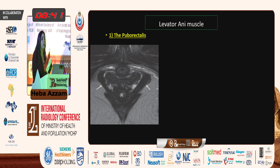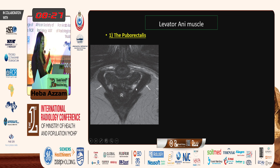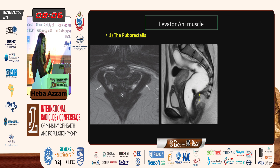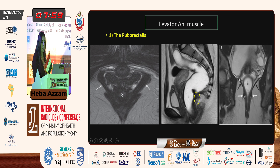The puborectalis muscle arises from the pubic bone, forming a U-shaped sling behind the rectum, responsible for formation of the anorectal angle. The space between the two limbs of the puborectalis muscle — through which the urethra, vagina, and rectum pass — is called the urogenital hiatus. The puborectalis is best seen on axial MR images, allowing assessment of muscle thickness and defects. It can also be appreciated on sagittal images just posterior to the anorectal angle, and on coronal images beneath the iliococcygeus muscle, seen bilaterally between the iliococcygeus muscle and the anal sphincter.